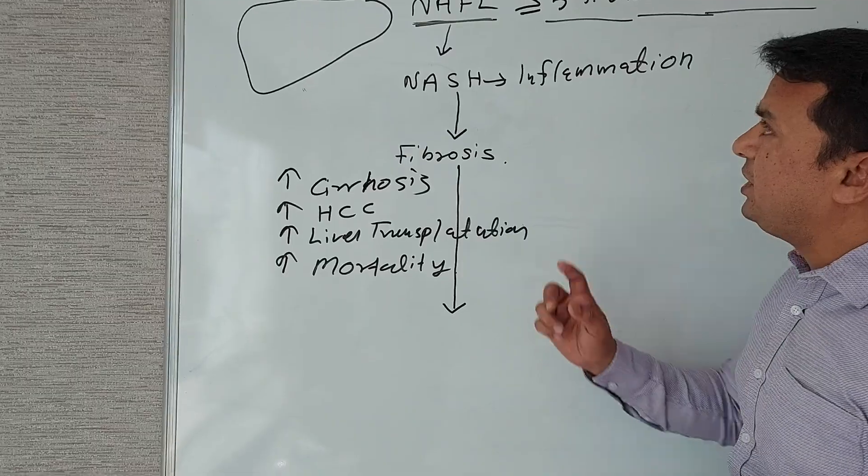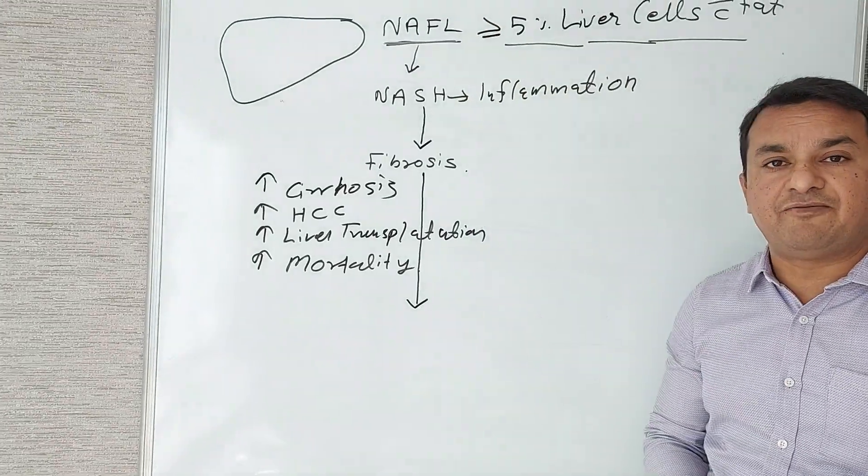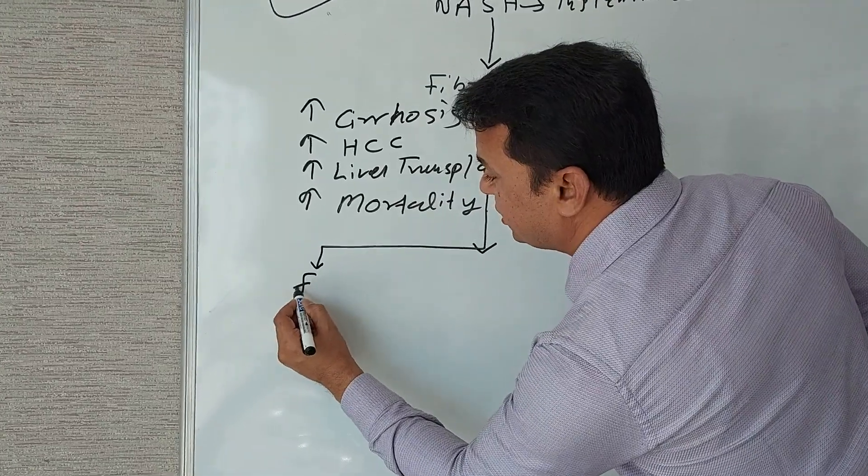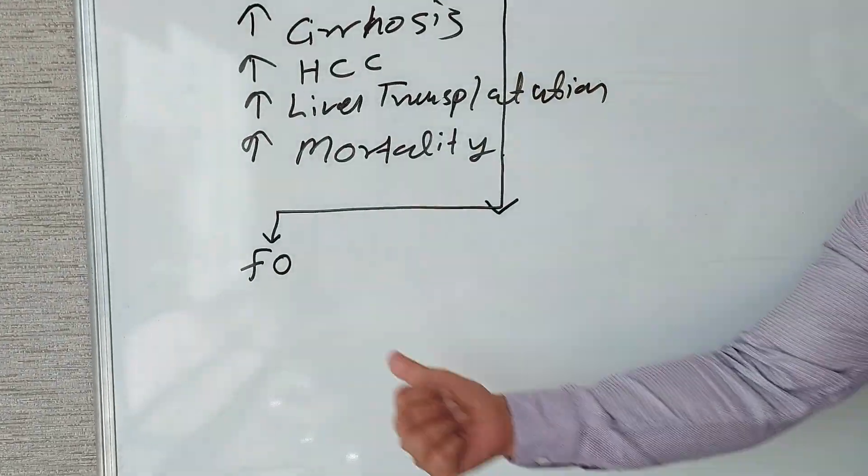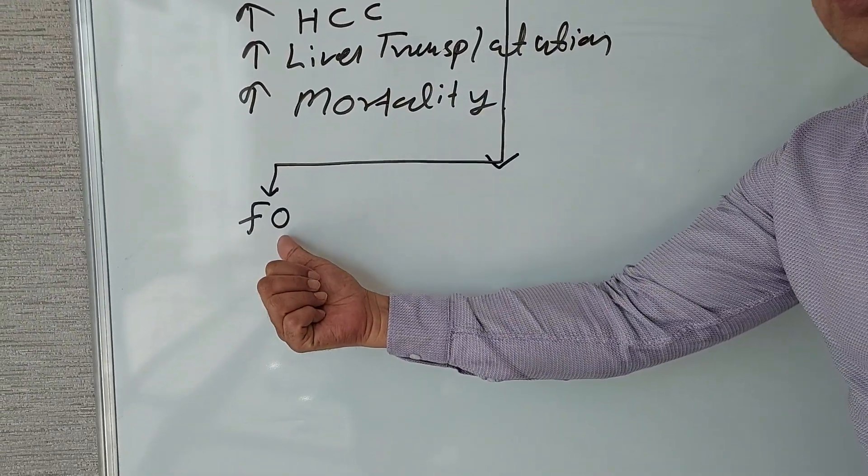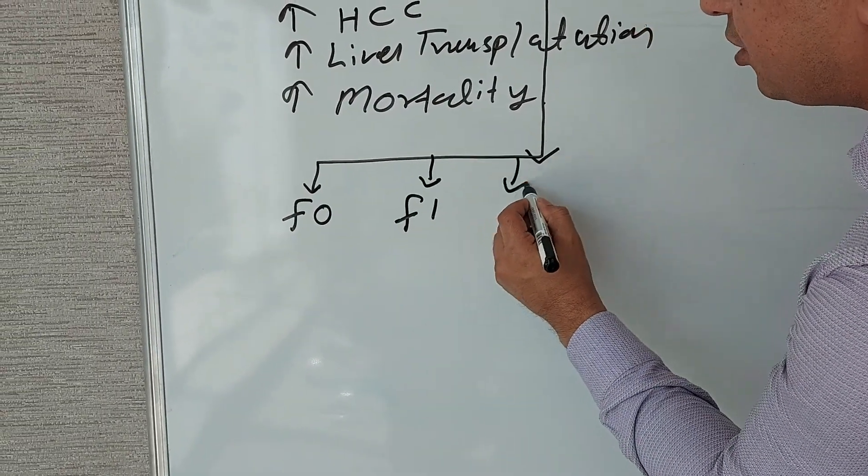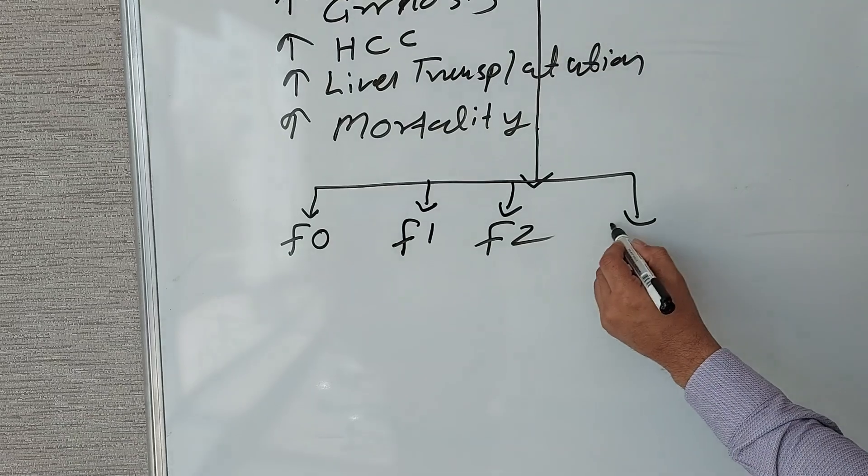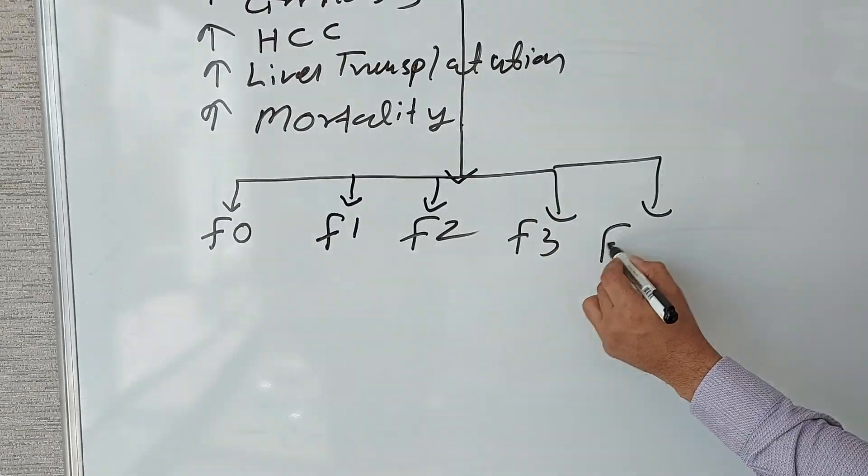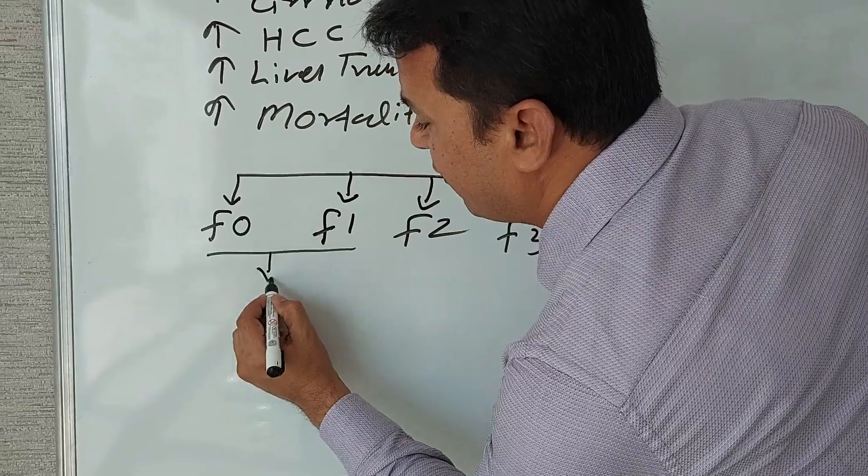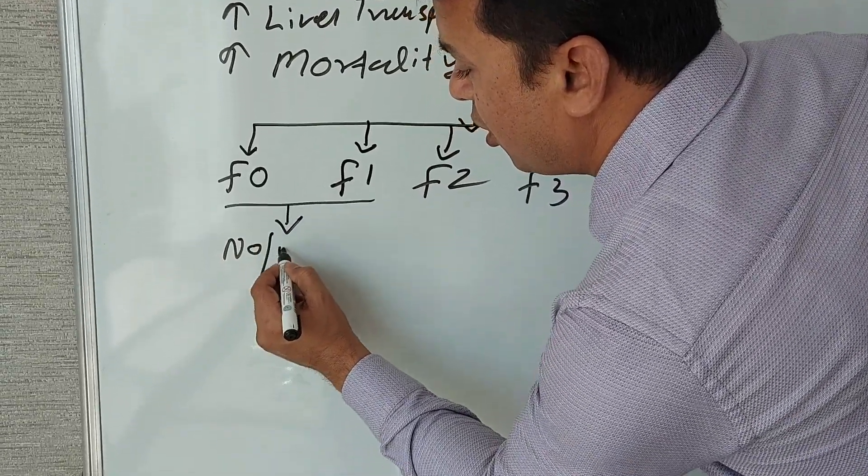liver in a patient having NAFLD? The grading of fibrosis ranges from F0 (F means fibrosis, grade 0) to F1, F2, F3, to F4. F0 and F1 means no or minimal